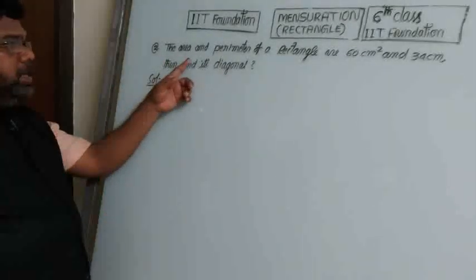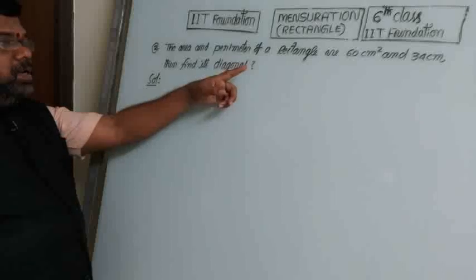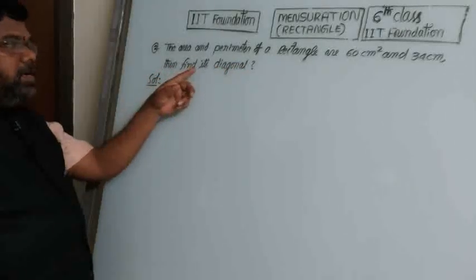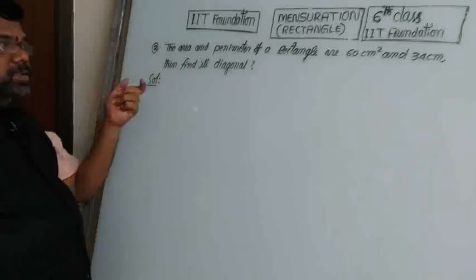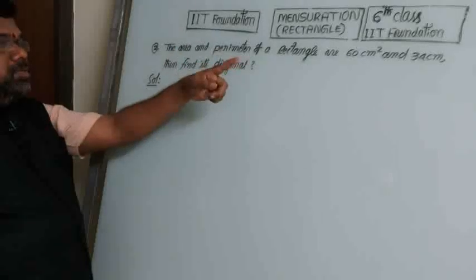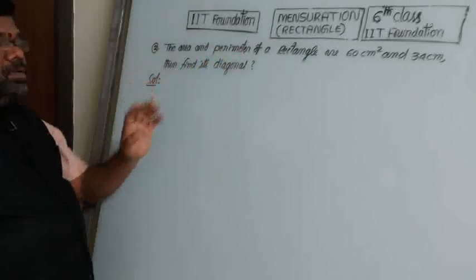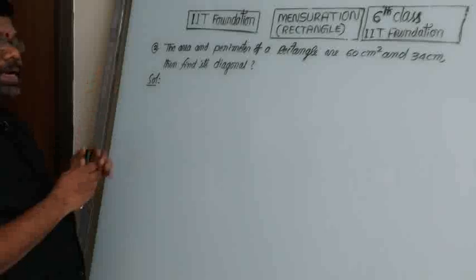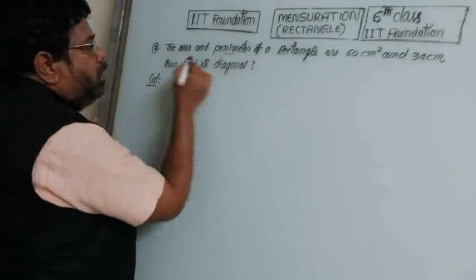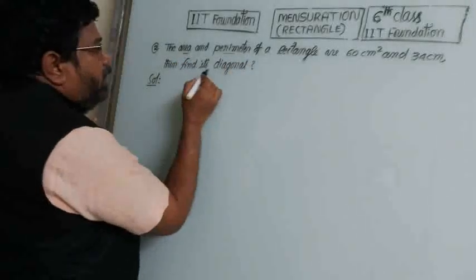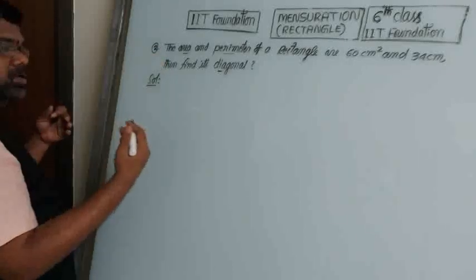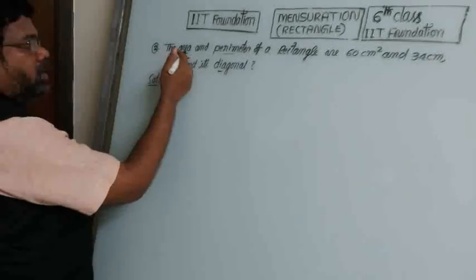Question number 2: the area and perimeter of a rectangle are 60 square centimeters and 34 centimeters respectively. Find its diagonal. So perimeter is 34 cm and area is 60 cm². We require the diagonal.